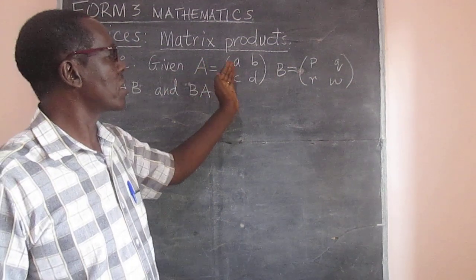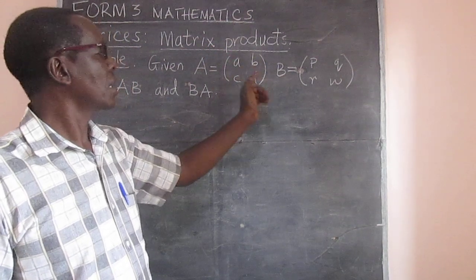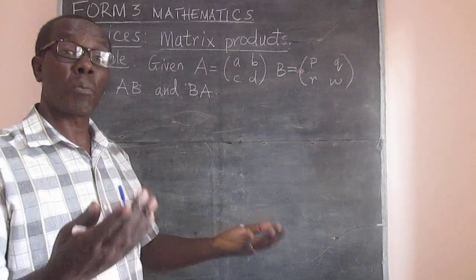So a matrix with two rows and two columns - see the rows and the columns - is called a 2x2 matrix.